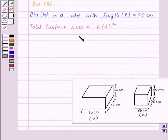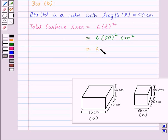Now let's substitute the values. 6 × l², L is 50 cm, so 50², and the unit will be cm². So this will give us 6 × 2500 cm², that is equal to 15,000 cm².